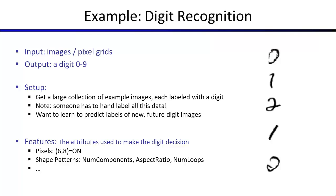You start with the data: a big collection of example images, each one labeled. You have to sit down as humans and demonstrate to the machine — this is a zero, this one's a one, this one's a two. There's expense to that: it's time consuming. You want to build a function that predicts the label of new digits. Sometimes it's not obvious — a digit at the bottom might be either a zero or a two. Even when humans annotate data, you might not agree on the training set, so there's going to be some noise in the training set.